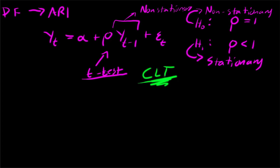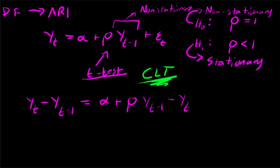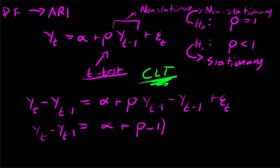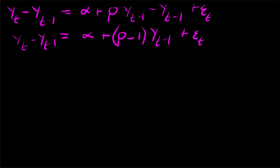Dickey and Fuller had a good idea: subtract y(t-1) from each side, giving us y(t) - y(t-1) = alpha + rho*y(t-1) - y(t-1) + epsilon(t), which simplifies to y(t) - y(t-1) = alpha + (rho - 1)*y(t-1) + epsilon(t). The question is why this new form is better.